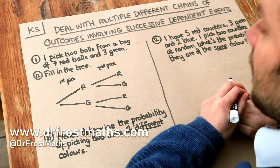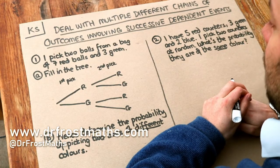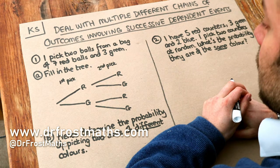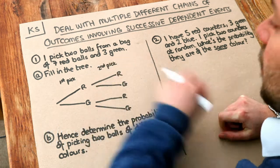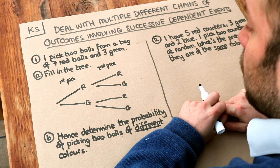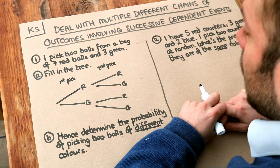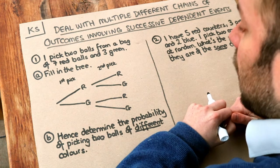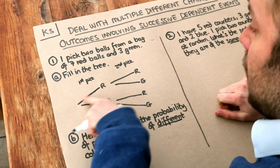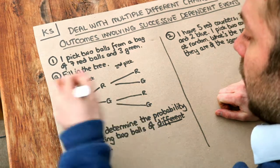Welcome to this Dr Ross Maths key skill video on dealing with multiple different chains of outcomes involving successive dependent events. We have this question: I picked two balls from a bag of seven red balls and three green — fill in this probability tree. This represents our first choice of ball, so we could either get red or green.